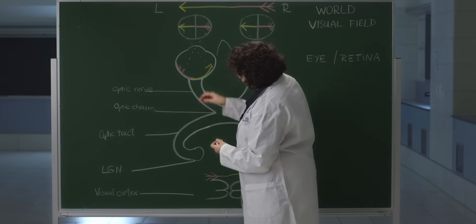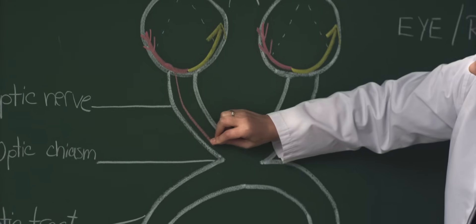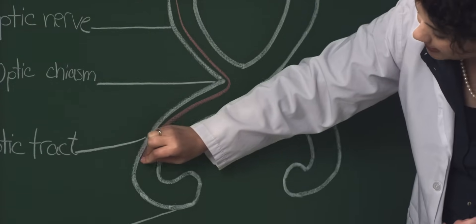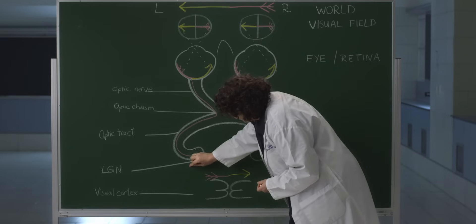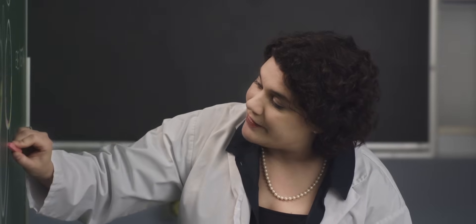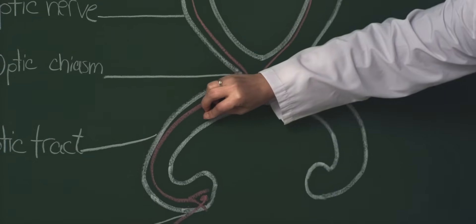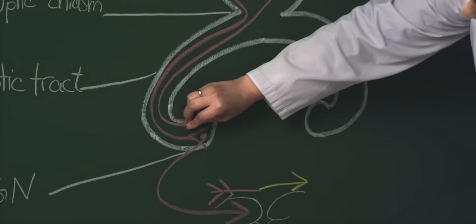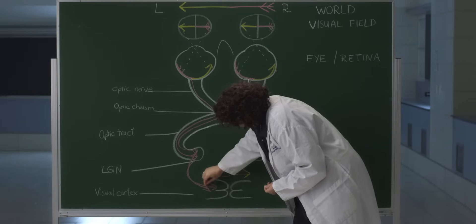First, let's take these temporal fibers down the optic nerve. They're going to travel in the ipsilateral optic tracts — on the same side — to the lateral geniculate nucleus, where they will synapse and project to the primary visual cortex. The nasal fibers from the other eye carry that same visual information. They're also going to travel down their optic nerve, and then cross in the optic chiasm to the contralateral, or opposite, optic tract, synapse in the lateral geniculate nucleus, and also project to the primary visual cortex.